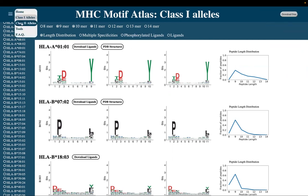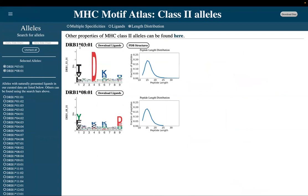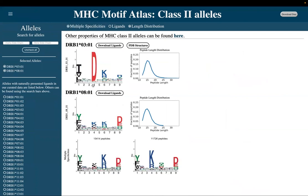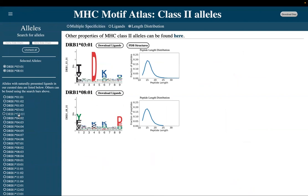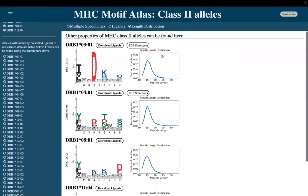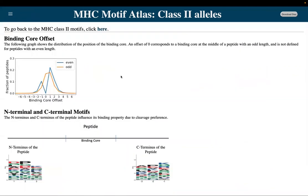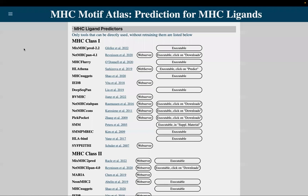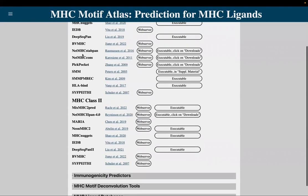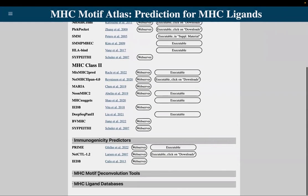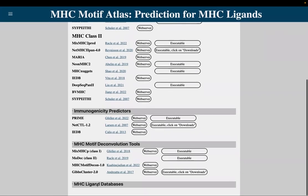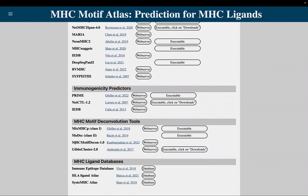Now let's look at class 2 alleles. Similarly to class 1, you can see multiple specificities and compare between different alleles at the same time. In addition, we provide an extra page for common properties between class 2 alleles that can help you to better understand the binding specificity for class 2. As for the tools page, we provide direct links for different predictors — for example, MHC ligand predictors for class 1 and class 2, NetMHC and NetMHCpan predictors, MHC motif deconvolution tools, and direct links for MHC ligand databases.